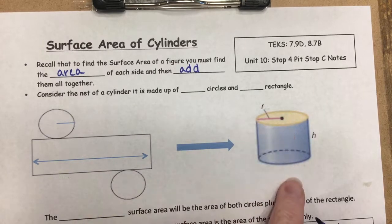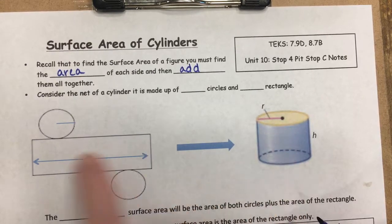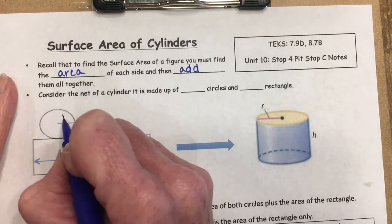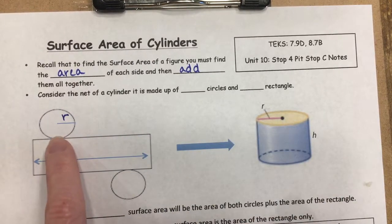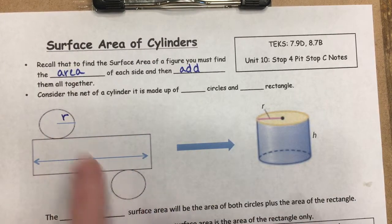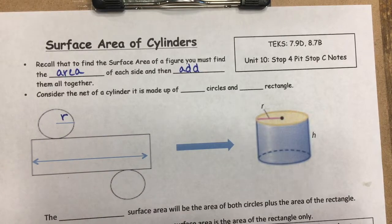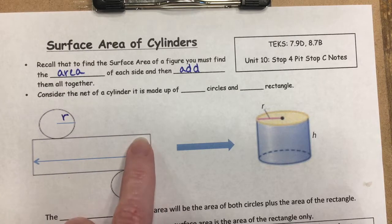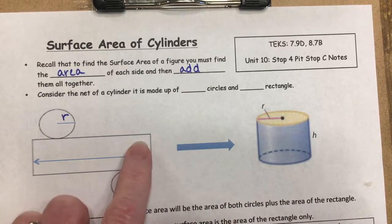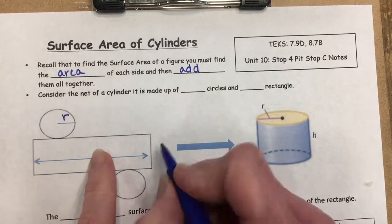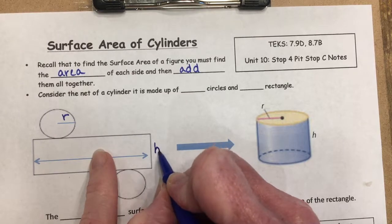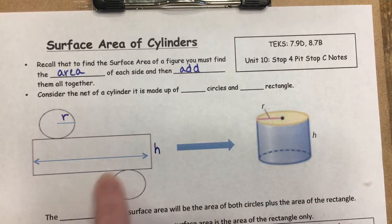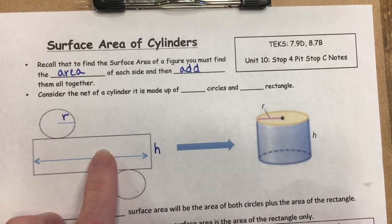The top and bottom of the cylinder are both circles, each with radius r. You can find the area of one and double it since they're the same size. The height of the cylinder becomes the height of your rectangle — when you cut and unwrap the cylinder, the curved side unfolds into a rectangle.